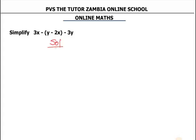We are going to maintain our 3x, then we are going to break down this part here. This negative is multiplying everything inside, but here there's a positive so nothing changes — negative times positive is negative. Then for y, negative times negative gives positive, then 2x. This one never had any brackets so we keep it the way it is.